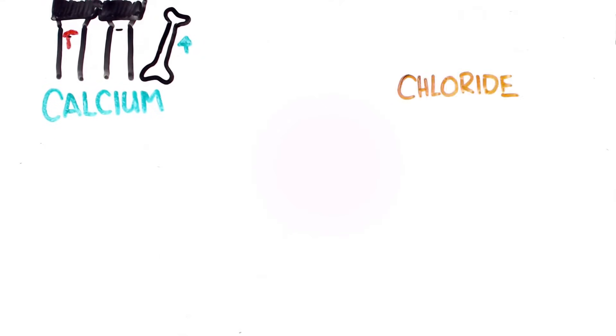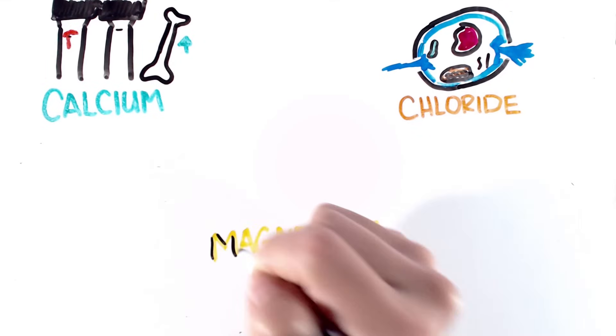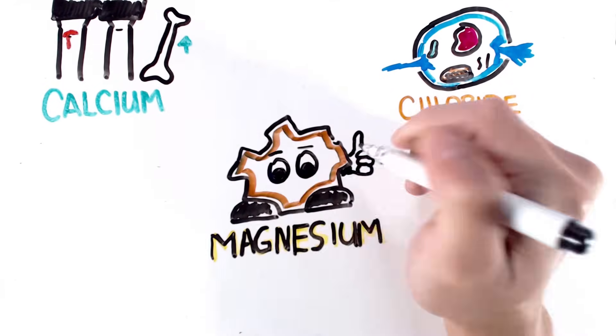And electrolytes have other functions as well. Calcium helps with blood clotting and bone density. Chloride usually hangs out with sodium and helps transport water in and out of cells. Magnesium is used to make enzymes function.